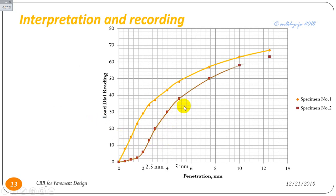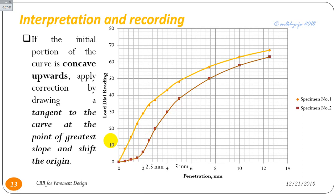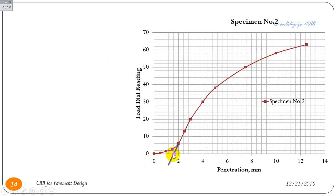For Sample 2, the initial curve is convex downward, so a correction is required. The correction is applied by drawing a tangent to the curve at the point of greatest slope. This tangent intersects the x-axis at 1.7 mm, so the origin is shifted to 1.7 mm. From this corrected origin, the 2.5 mm penetration corresponds to 4.2 mm on the original graph, giving a corrected load of 32.9 kg.